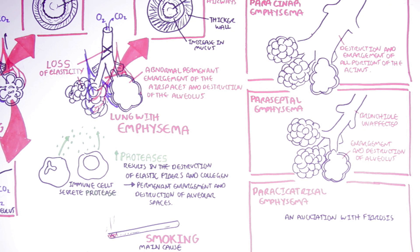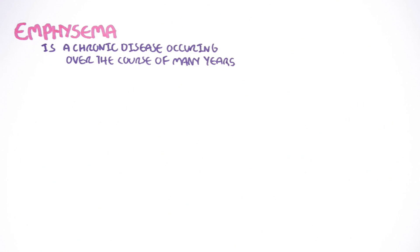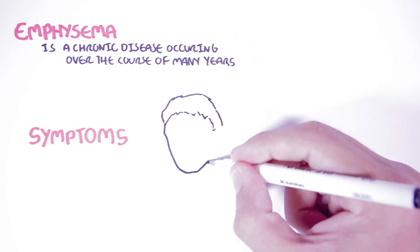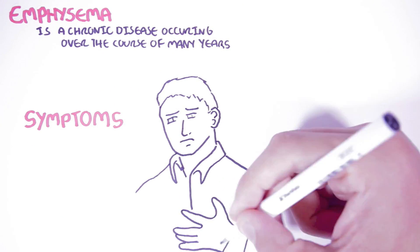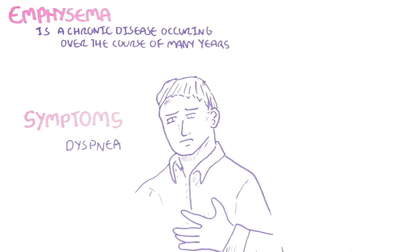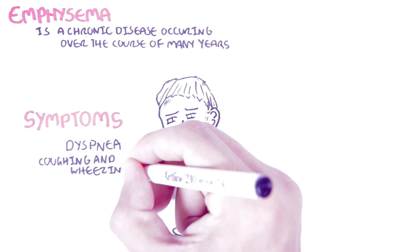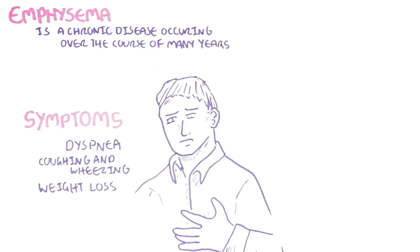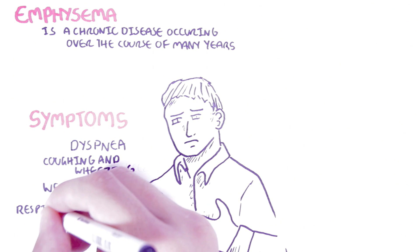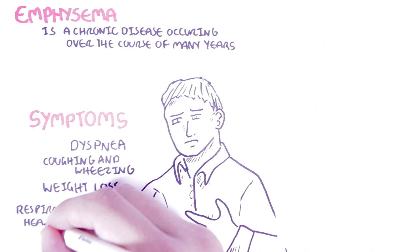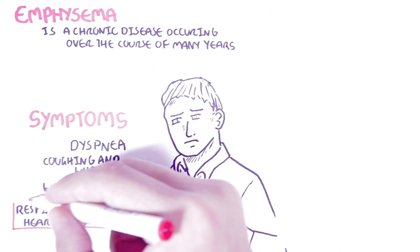Emphysema is a chronic disease occurring over the course of many years. Dyspnea is usually the first symptom and can occur even at rest — dyspnea is discomfort of breathing, usually slow breathing. Other symptoms include cough and wheezing, and weight loss is often seen. If emphysema becomes severe and is left untreated, respiratory failure and heart failure can result.